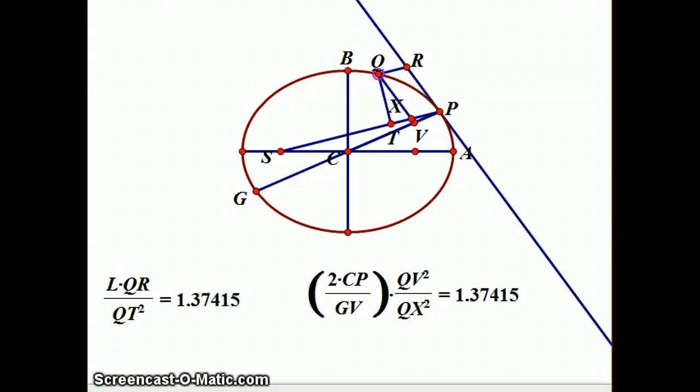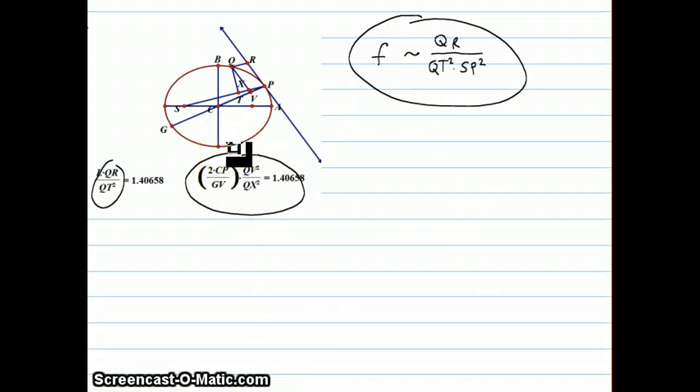So what we're going to be able to do is, as P gets really close to Q, this thing basically becomes 1 because 2CP becomes GV. And since QX and QV basically become the same line segment as Q gets real close to P, that thing's also 1. So basically, what ends up happening is that this entire thing becomes 1, and we just get 1 over SP squared. Which is exactly what Newton set out to prove. The thing he set out to prove is that if the planetary orbits are ellipses, then the force that keeps the planet in that orbit would be proportional to the square of the distance from the sun where the sun's at one of the foci of the ellipse.